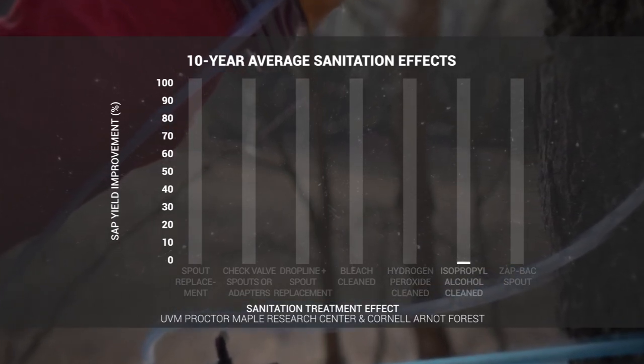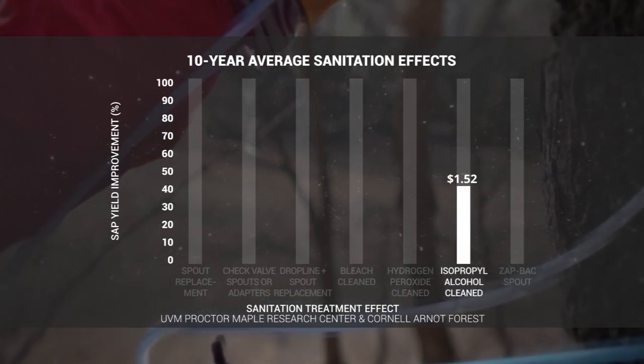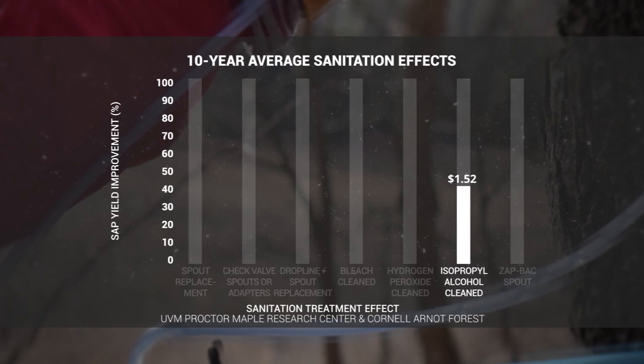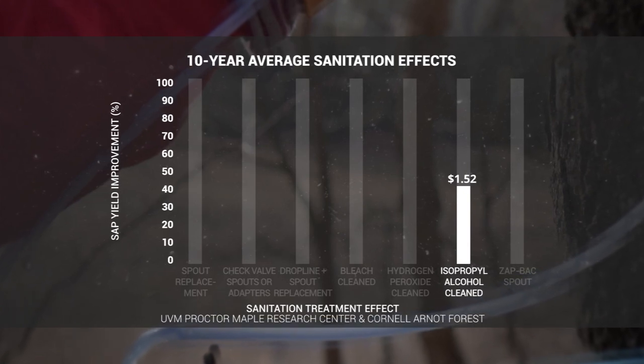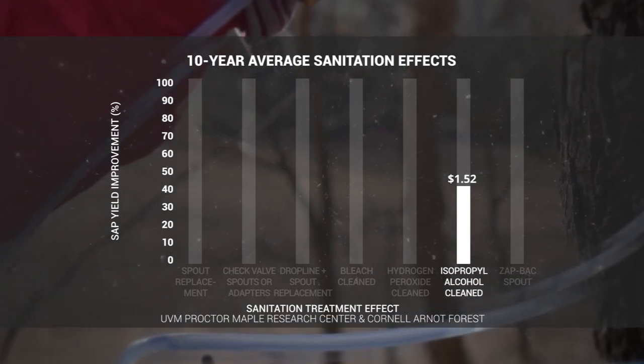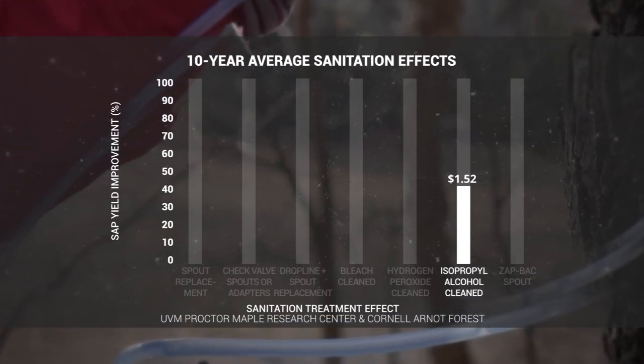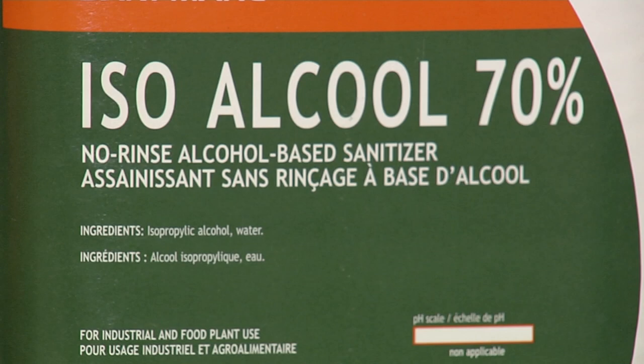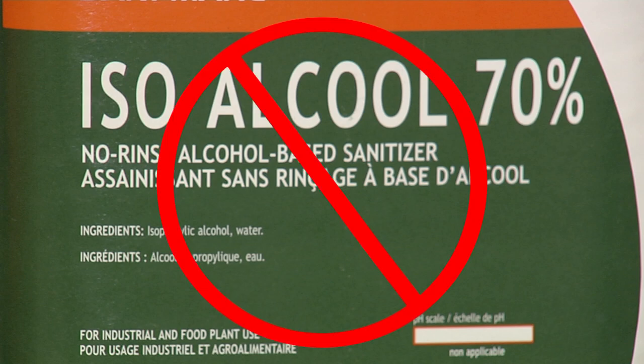Isopropyl alcohol, or IPA, is approved for use in Quebec but is illegal to use in the United States. Using IPA in the U.S. may result in fines and legal action.